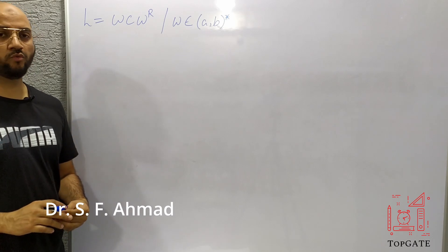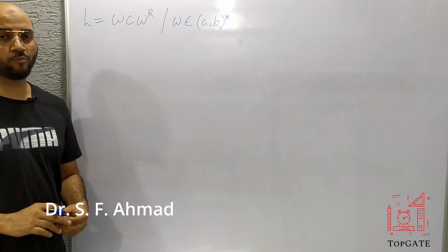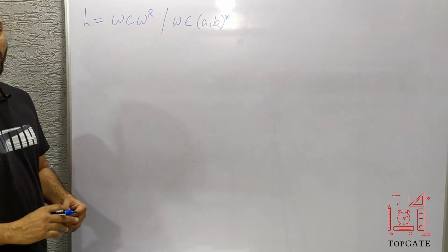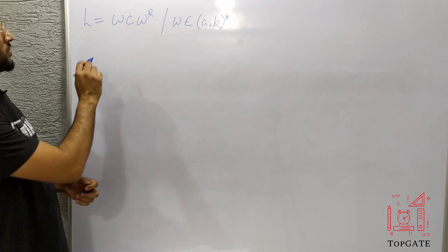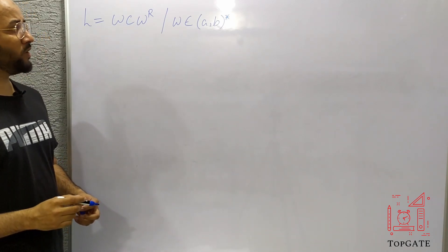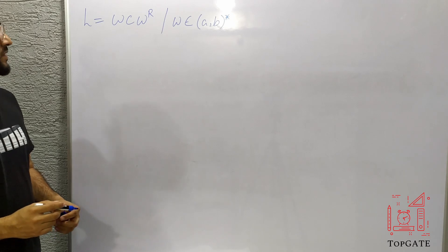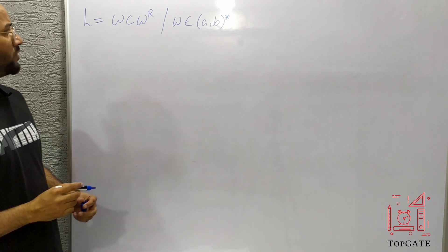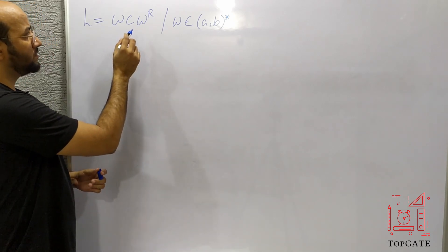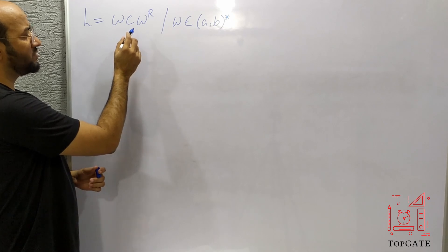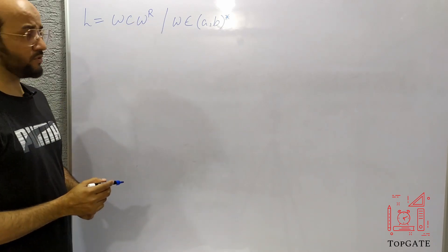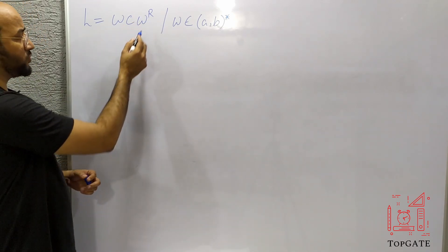Hello students. In this video we will discuss one more problem of Turing machine — that is to design a Turing machine for the language L = WCW^R, where W belongs to {A, B}*. In the previous video we discussed a similar problem, but there was no R in that language. In this one we have W^R.